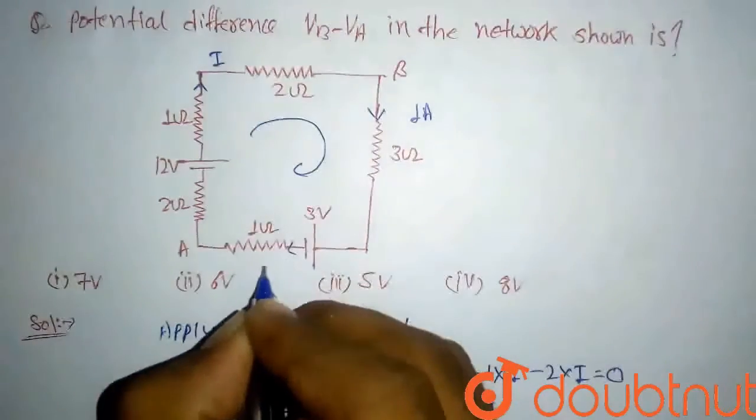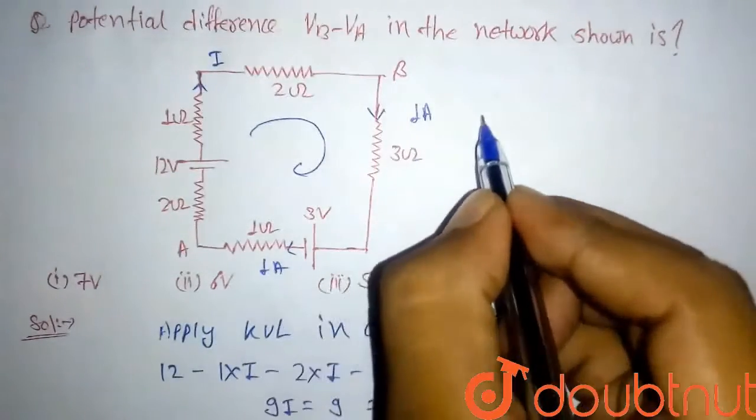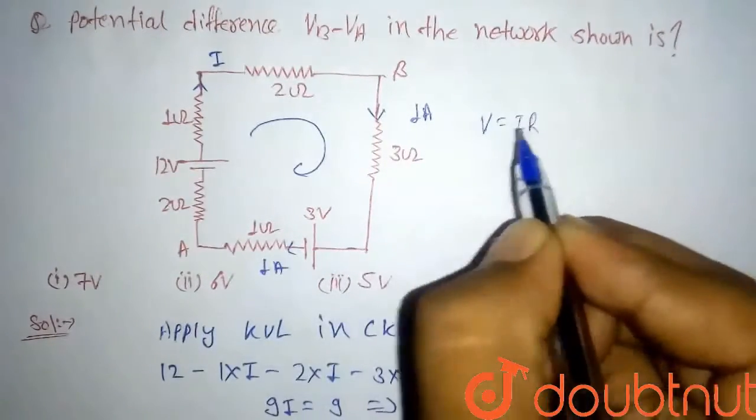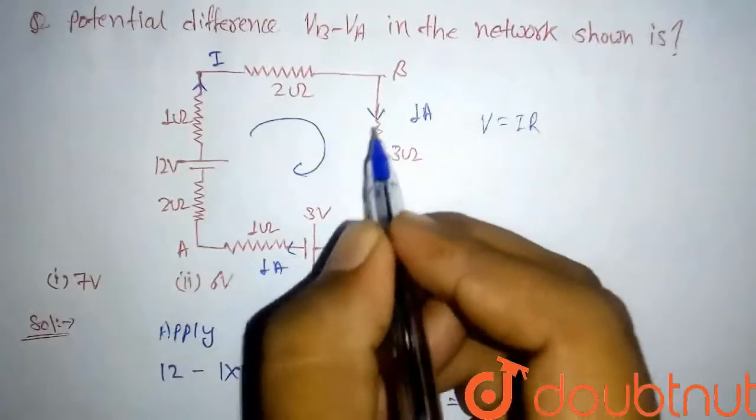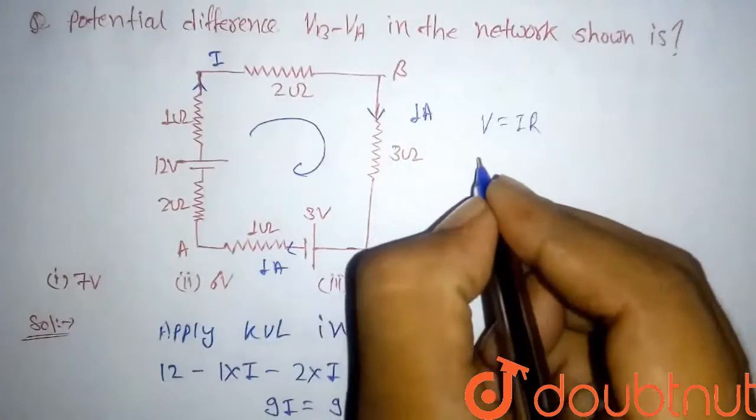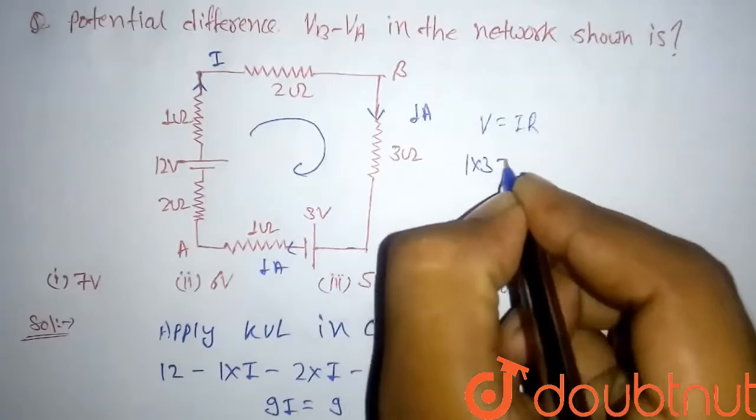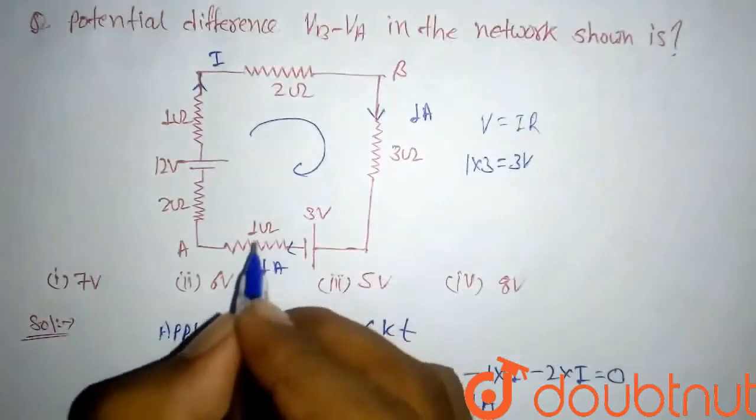So here, from Ohm's law, V equal to IR. Voltage drop in this resistor will be 1 into 3, which will be 3 volt. And voltage drop in this resistor will be 1 into 1, which will be 1 volt.